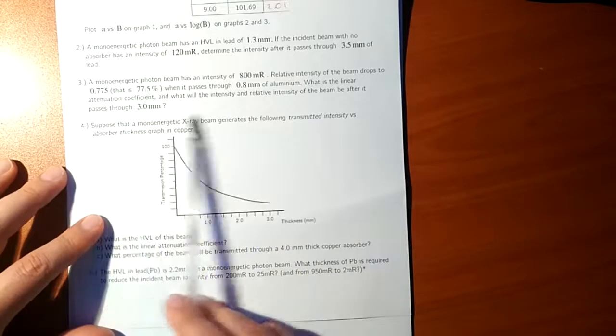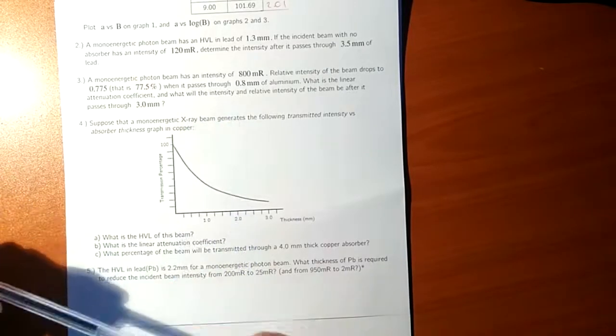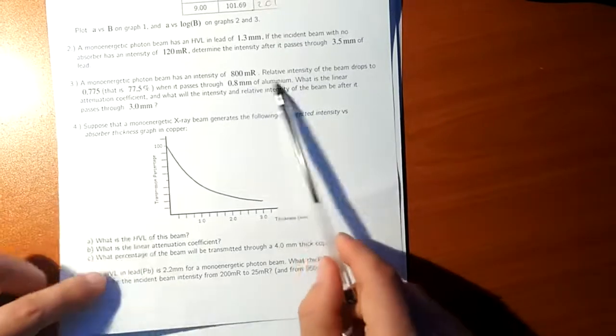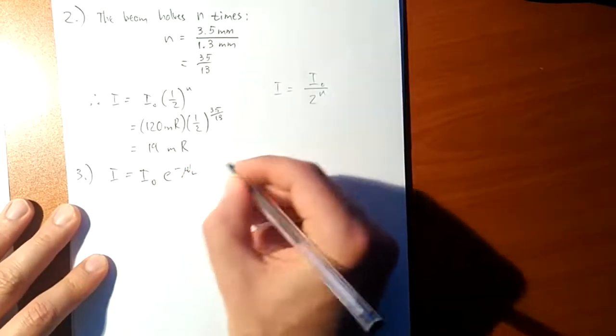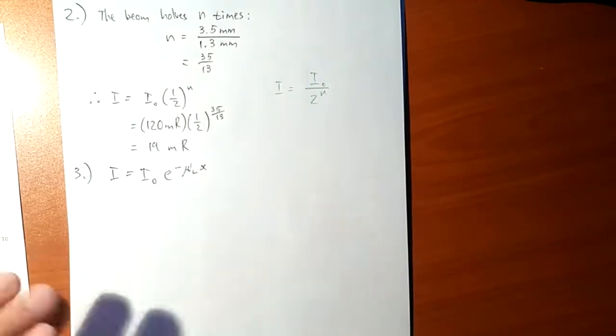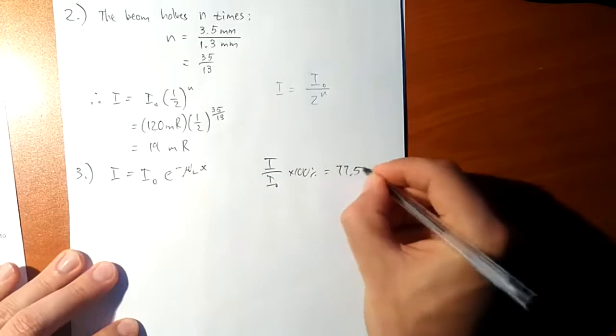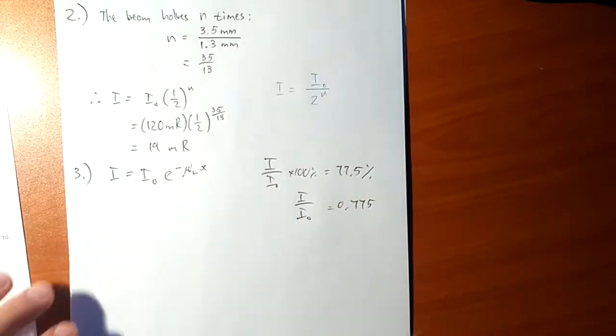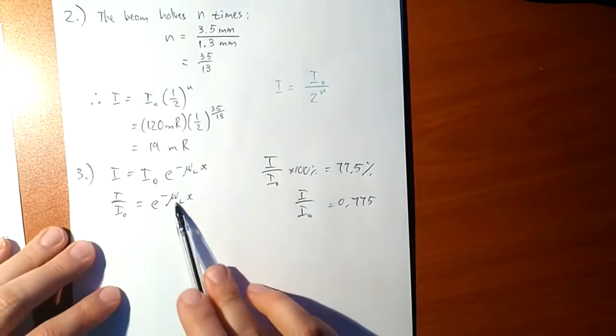Okay, so the intensity after it passes through a different thickness, we can calculate that directly with the formula, only if we have the initial intensity and we have the linear attenuation coefficient, which is something we can easily calculate. In fact, we've got the initial intensity, we just need to calculate the linear attenuation coefficient, then we can use the formula. So let's calculate the linear attenuation coefficient. So where does that linear attenuation coefficient feature? It features in this formula: Intensity is the initial intensity times e to the minus μₗ, that's the linear attenuation coefficient, times the thickness of the material x. And what I'm given is that the relative intensity, I over I₀ times 100%, is 77.5%, or just in other words, I over I₀ is 0.775. That is what was given. So I over I₀, that is given, is e to the minus μₗ x.